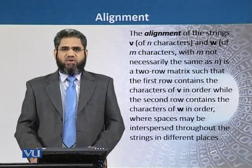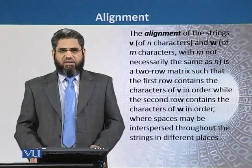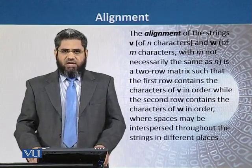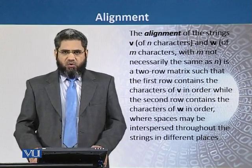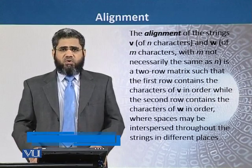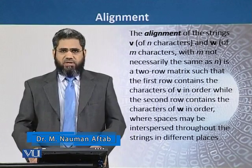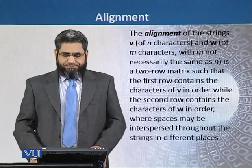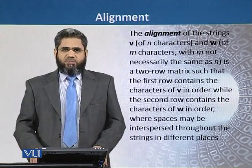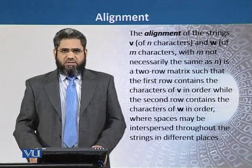The alignment of the strings V and W, where V has N characters and W has M characters, is represented as a two-row alignment matrix. The first row consists of the characters of the V string and the second row contains the characters of the W string. Between these two strings there may be spaces interspersed at different places.